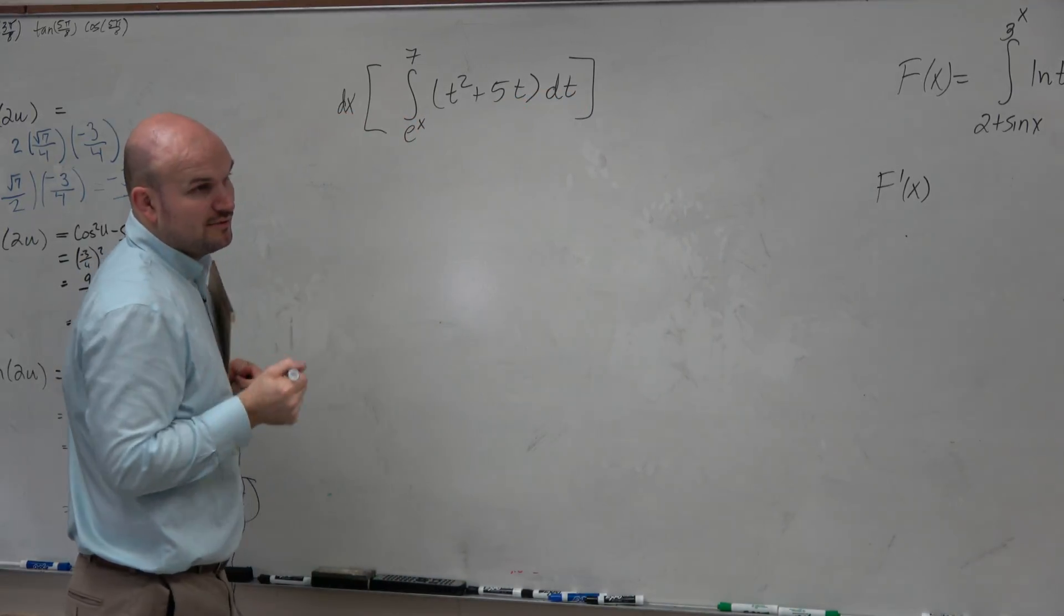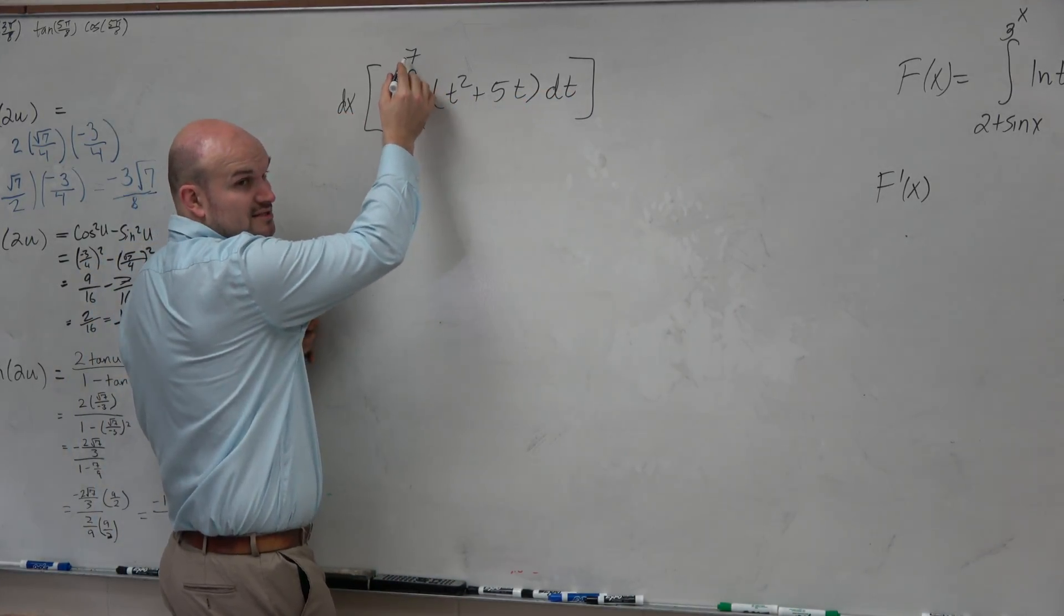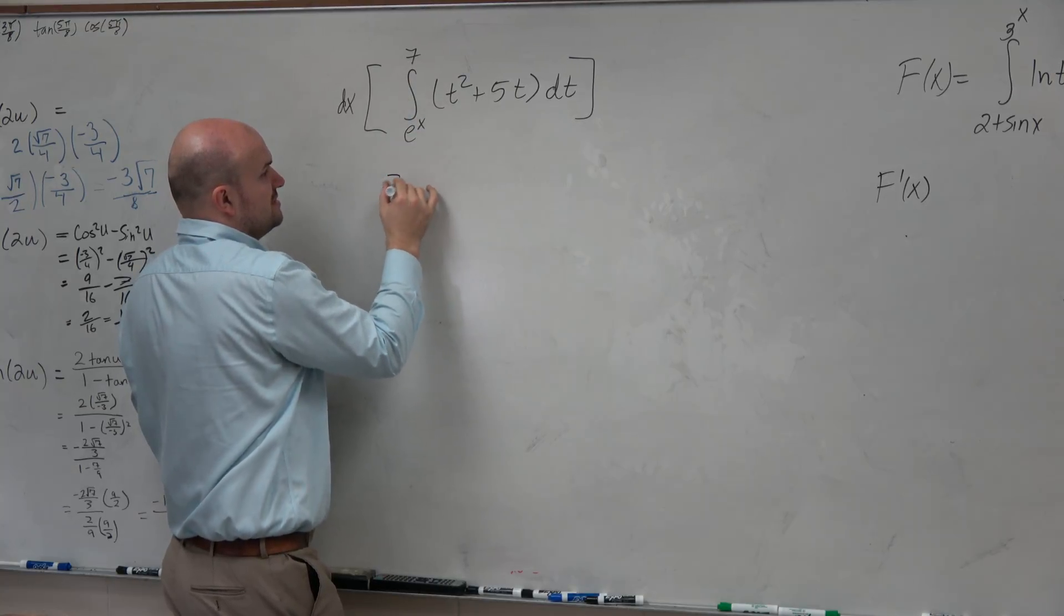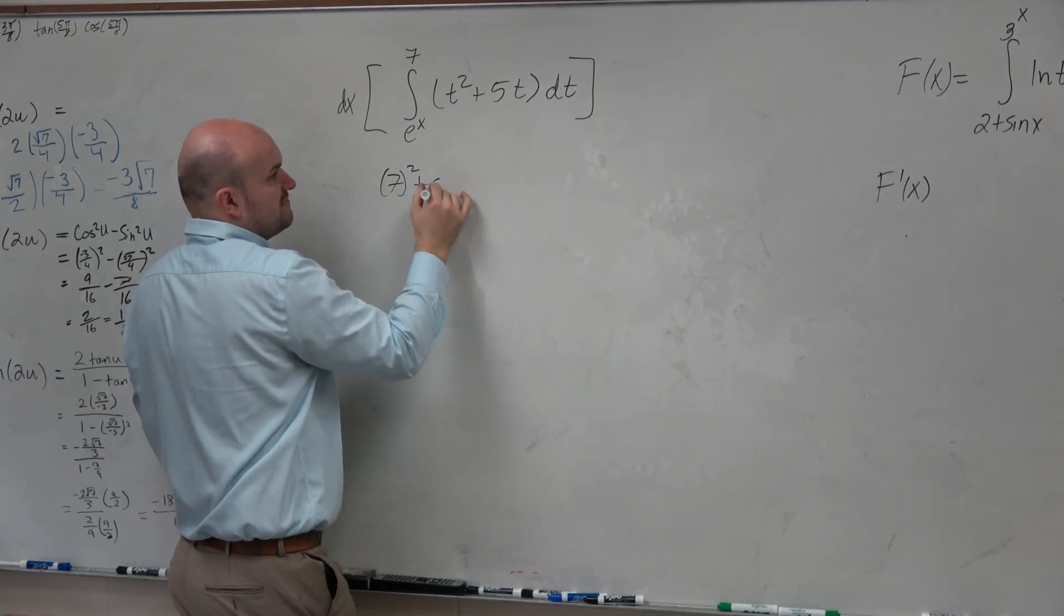So again, the first thing we want to do is you take your function and plug in the top integral. So therefore, this is 7 squared plus 5 times 7.